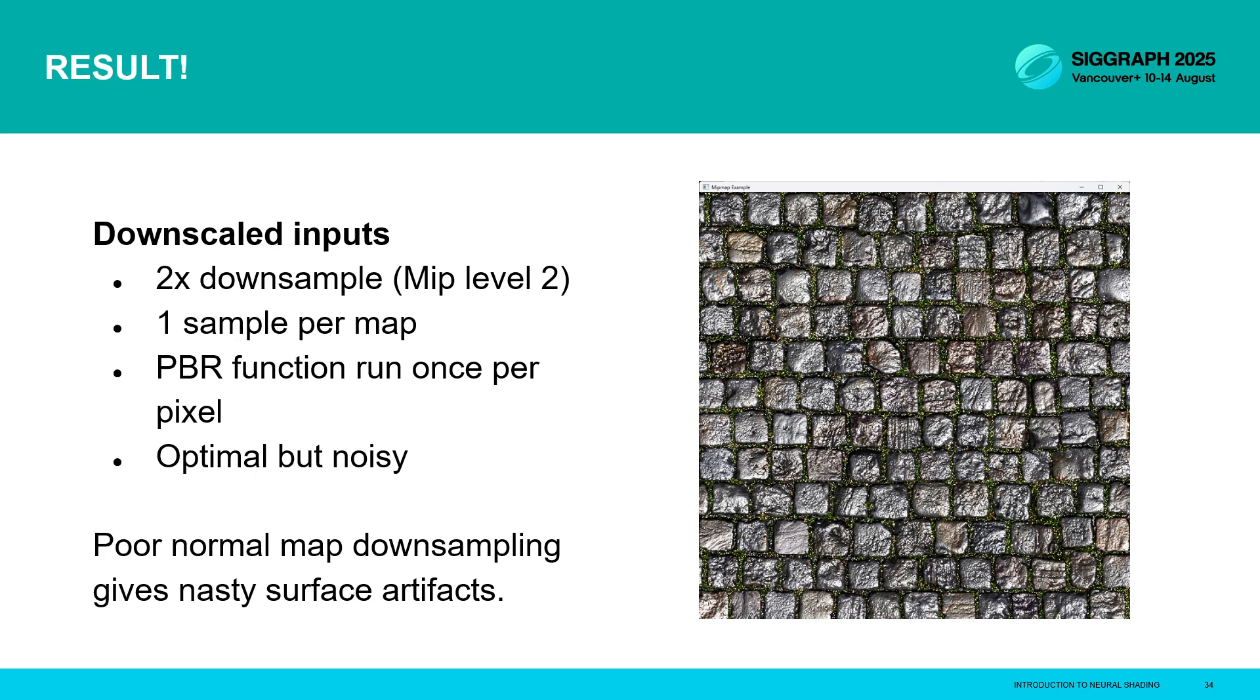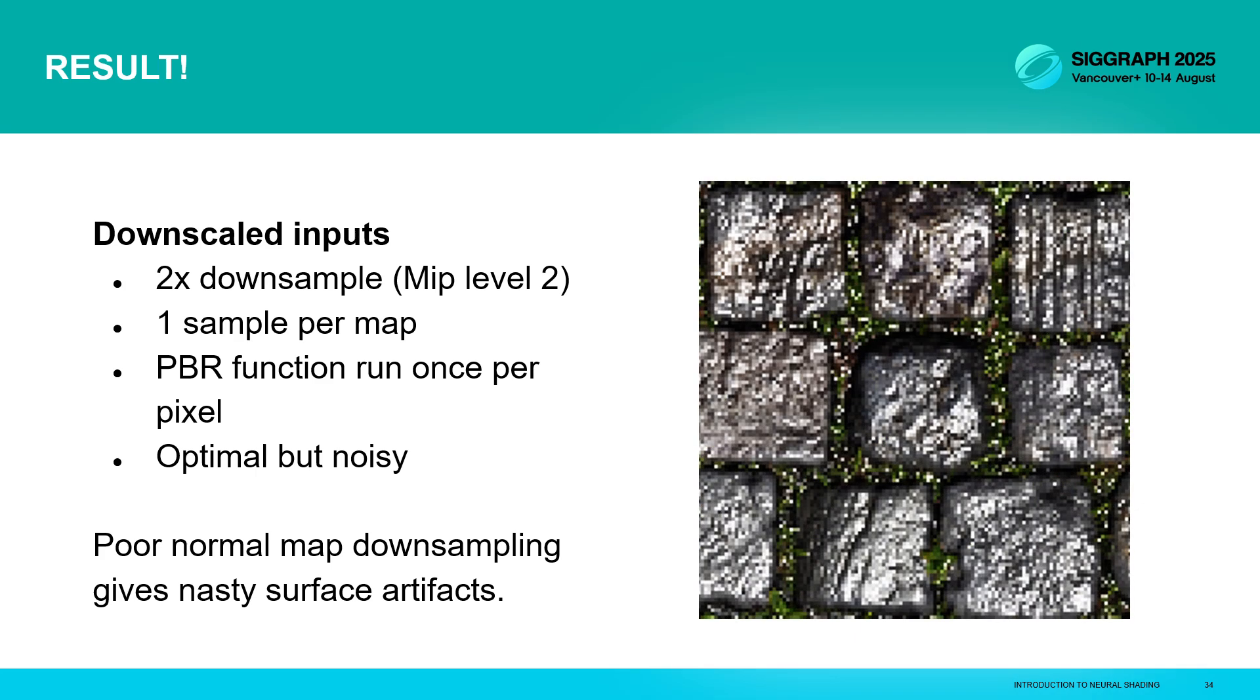Here's our result. From a distance, you might be able to spot some kind of noisy pixels, but when we zoom in, it becomes really very obvious. All these sort of white speckly details have appeared and the rocks have developed some pretty kind of strange specular patterns. All this is because in downsampling a normal map, we just invented new surfaces that didn't really exist at a higher resolution. So it looks wrong, but it is actually performant. We're doing one sample of each map per pixel and we're running this PBR function once per pixel. What we'd really like to do is retain this same performance but end up with something a lot prettier.